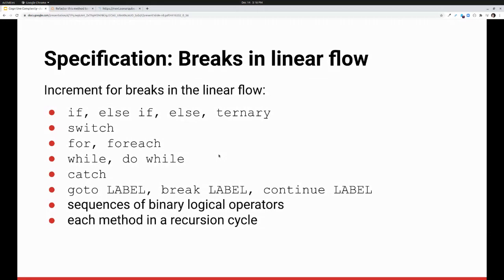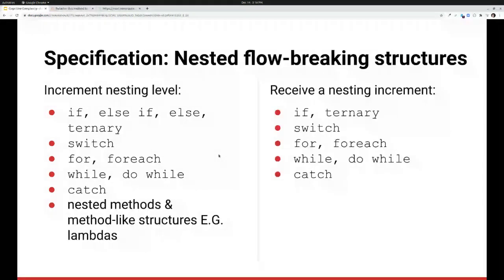Now, in terms of nesting, these on the left are the structures that we increment the nesting level for. So if, else if, else, ternary, switch, for, for each, while, do while, catch, and nested methods and method-like structures such as lambdas. So we don't increment for the method itself, but once you start nesting method inside of method inside of method, that is going to notch up the nesting level. These are the things that receive a nesting increment. So if I have an if inside of an if, then the if gets its own increment plus a nesting level increment. Same for the ternary switch, the loops, the catch. This will become clearer when we start looking at code.